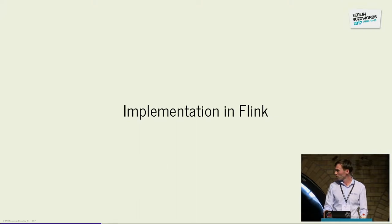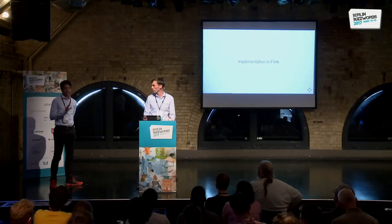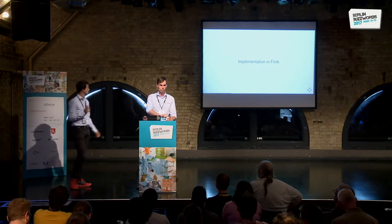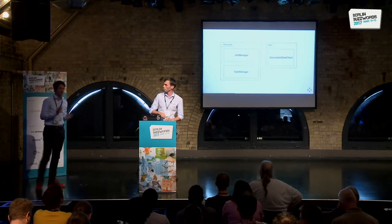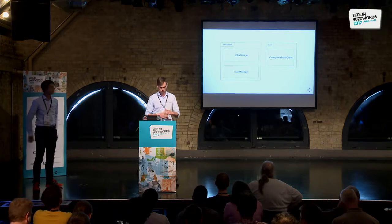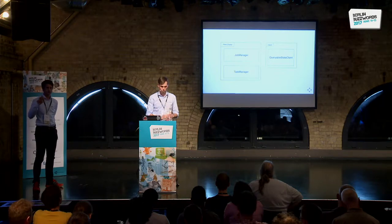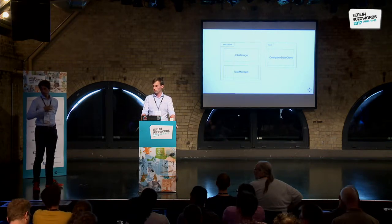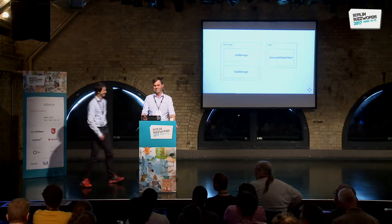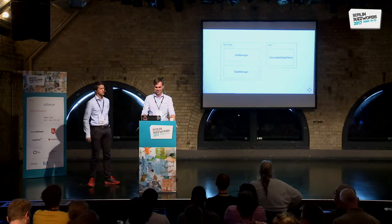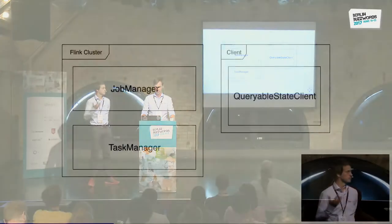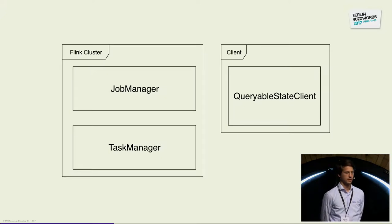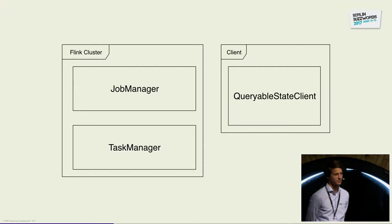Good afternoon from myself as well. I'm guessing most of you know what Apache Flink is. Just to recap the different components: you have the job manager, which is basically the master node, which does all the coordination between the different task managers. It doesn't do any of the work itself and doesn't hold any state. Then you have multiple task managers, which actually do the processing and are the workers. In the case of queryable state, you also have the queryable state client, which is just some process outside of the cluster — right now only a Java client is feasible, but it's separated from everything else.